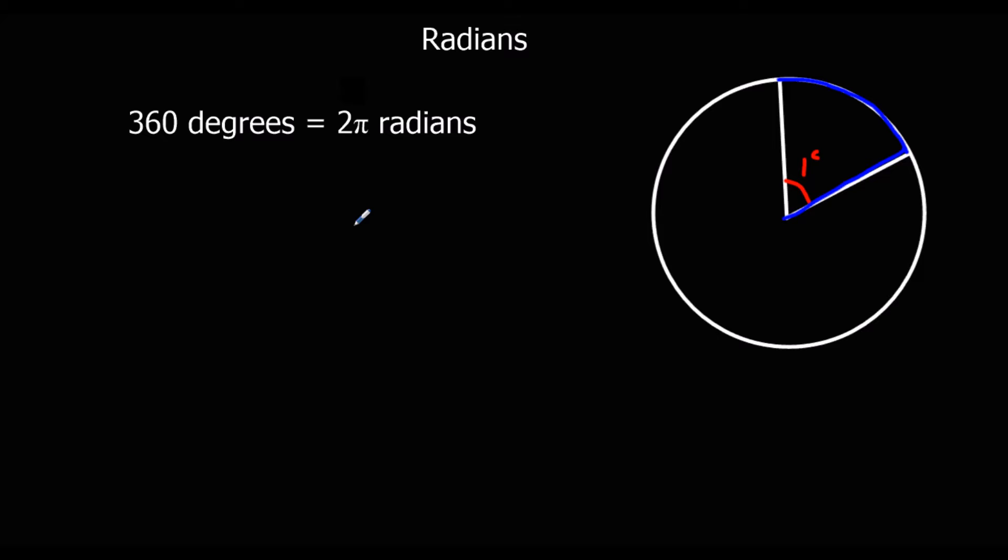And in a whole circle, there are two pi radians. So the whole way around the circle is two pi radians. So we can convert between degrees and radians if we need to.